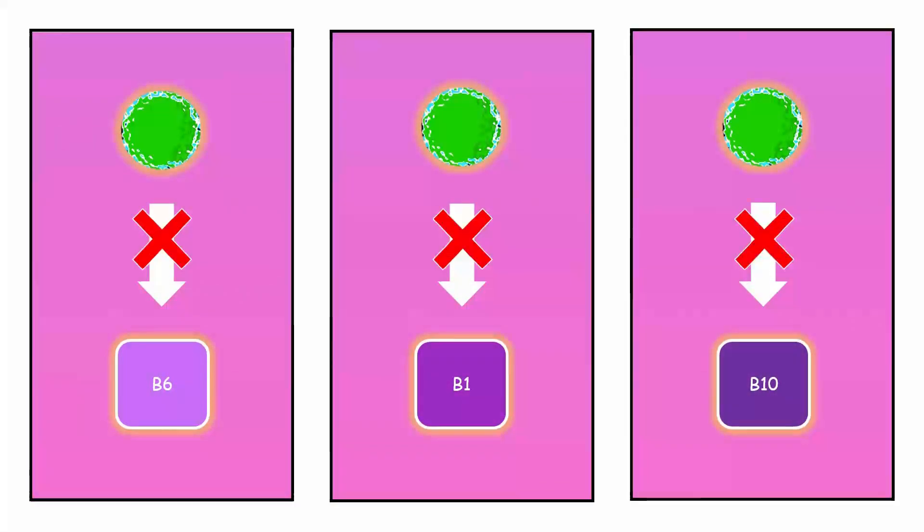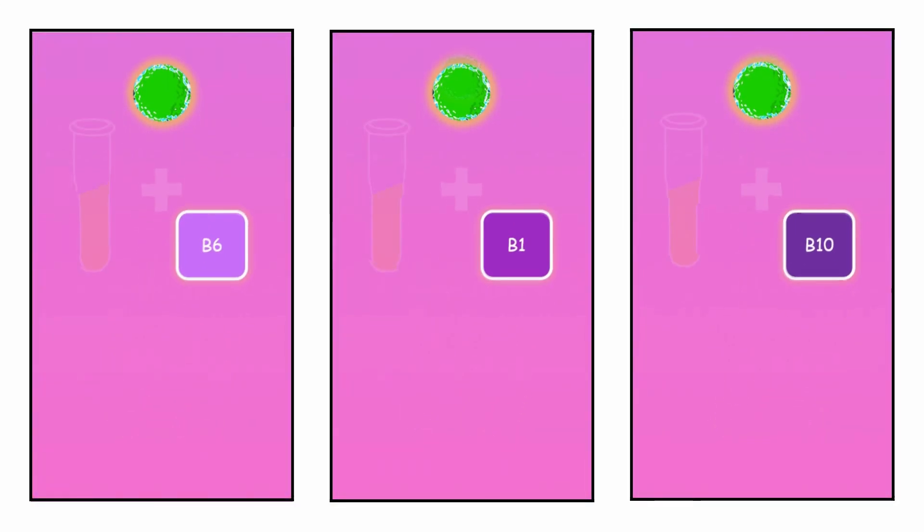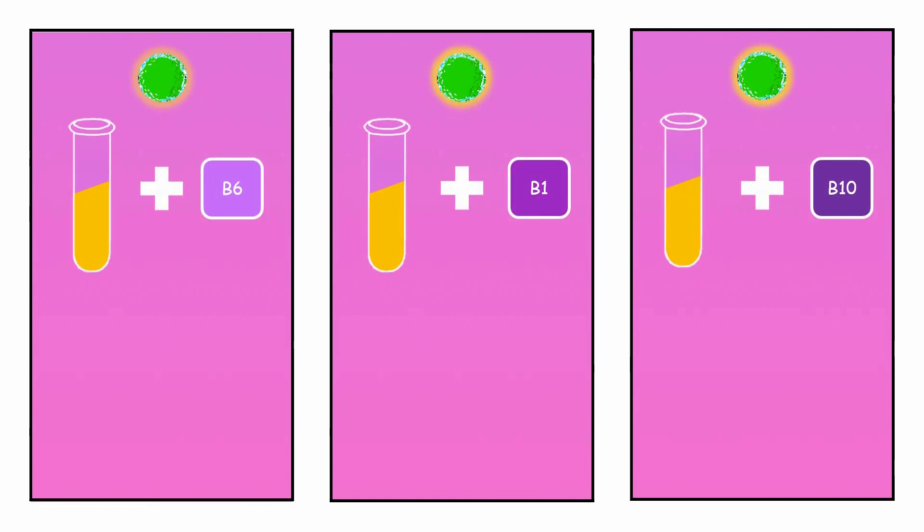The first could not produce vitamin B6, the second B1, and the third B10, or para-aminobenzoic acid. These mutant strains grew on the minimal medium when the missing component was added.